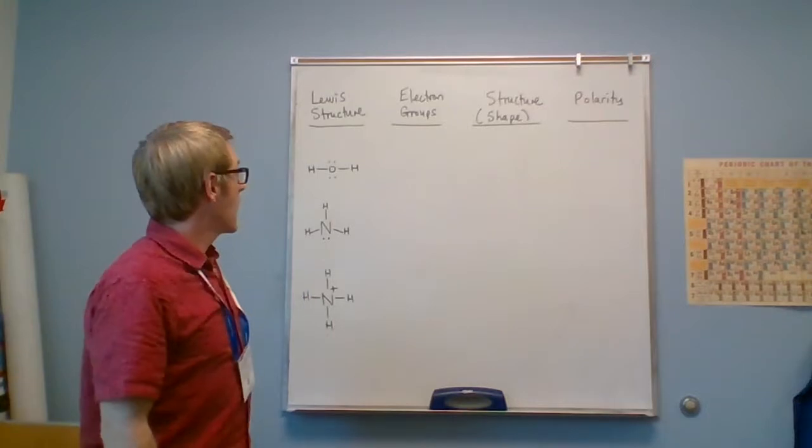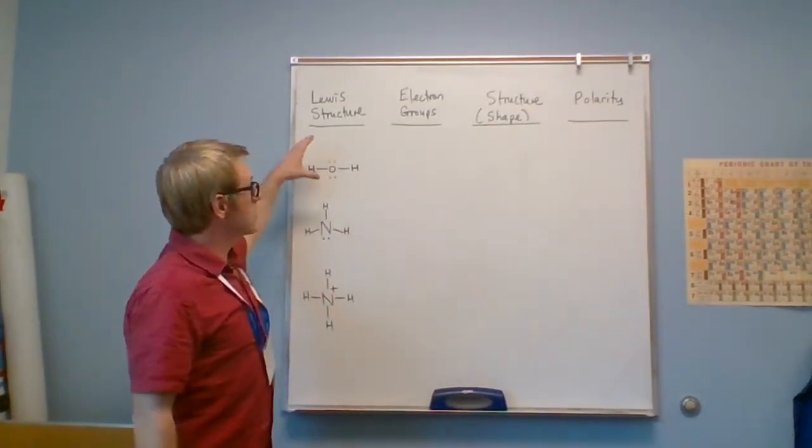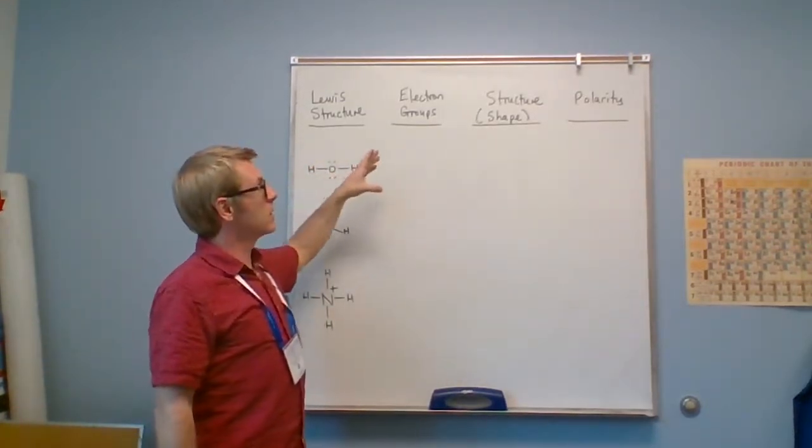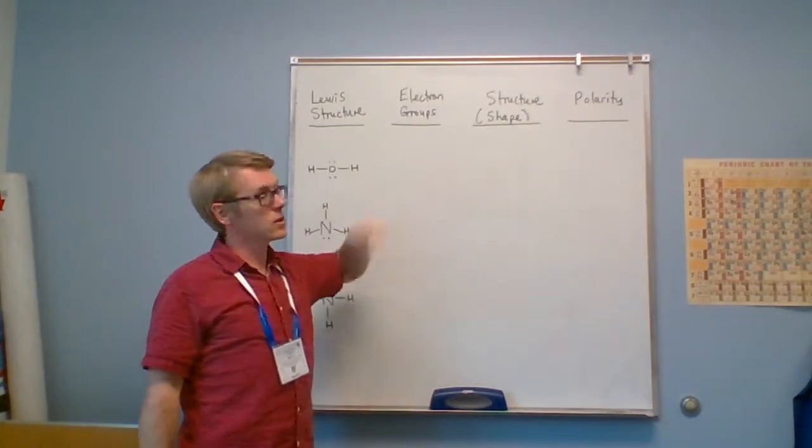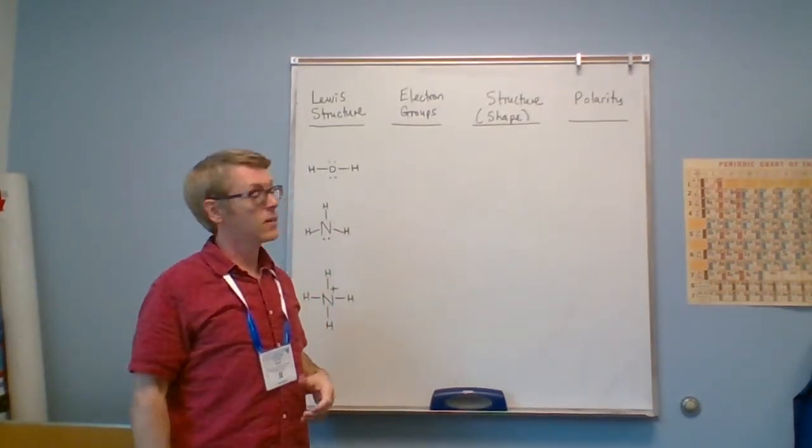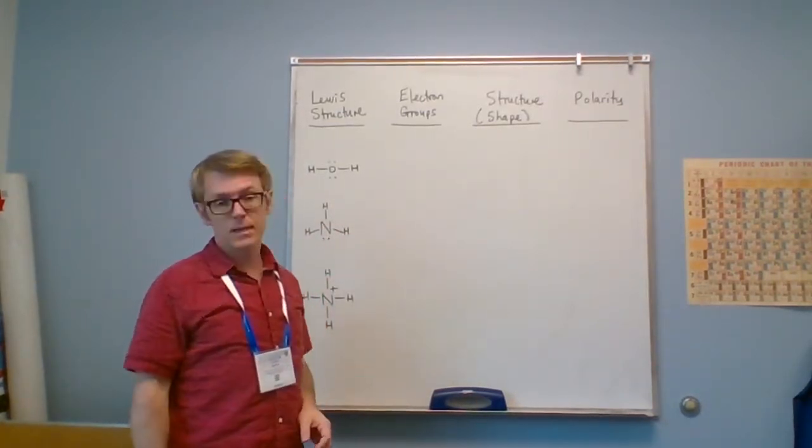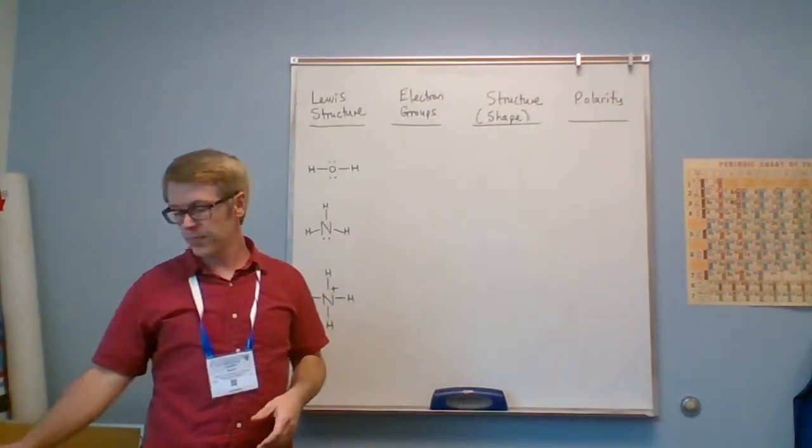In this video we're going to look at an extension of our Lewis dot structure theory to look at electron groups, the shape of a molecule, the actual shape of molecule, and its polarity based on its shape.